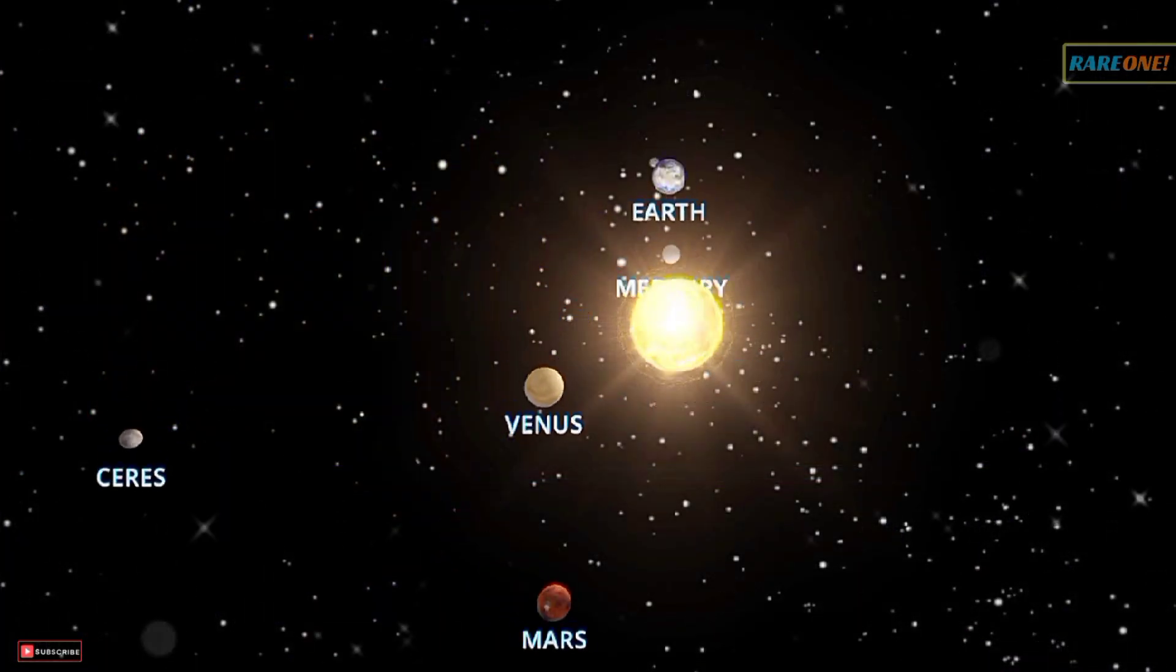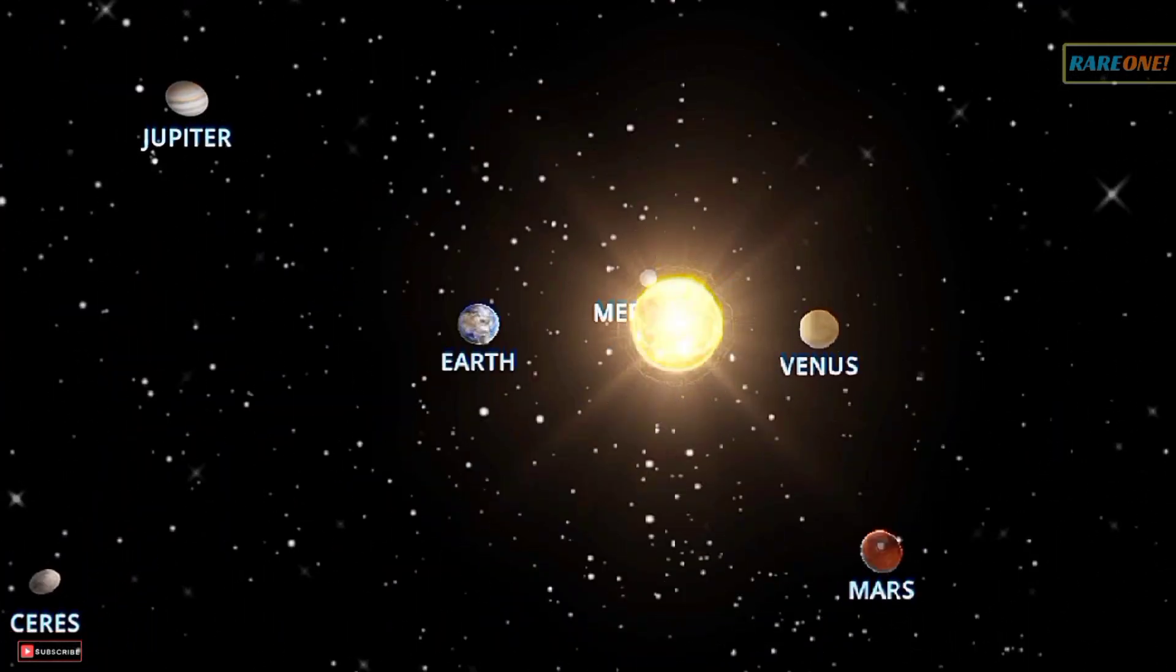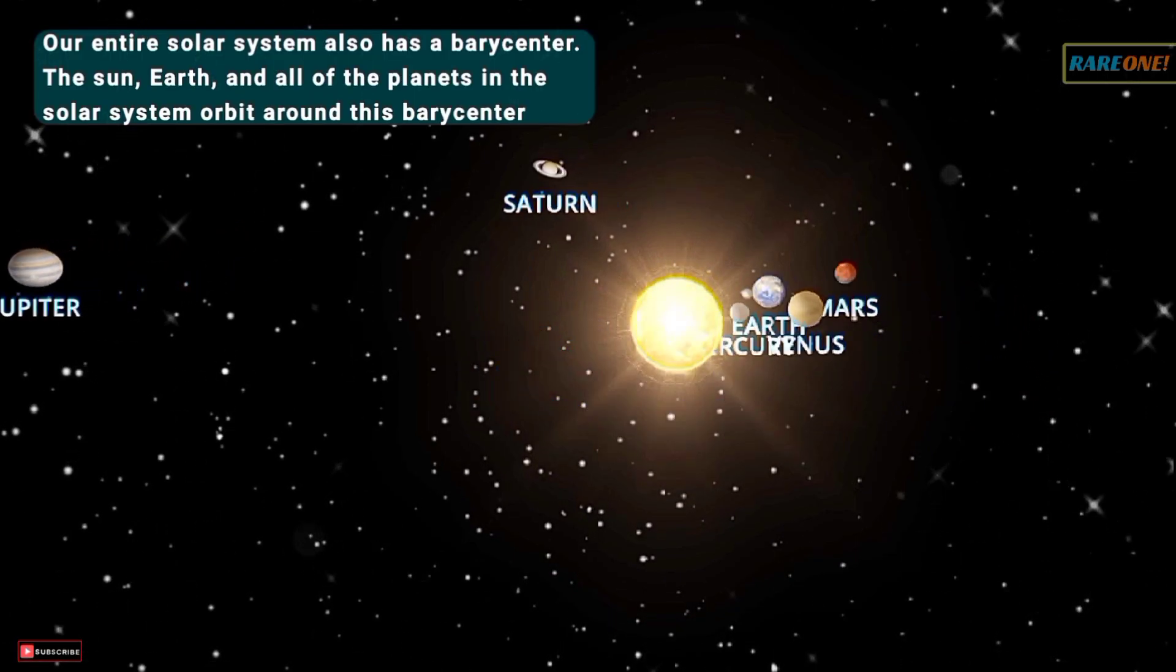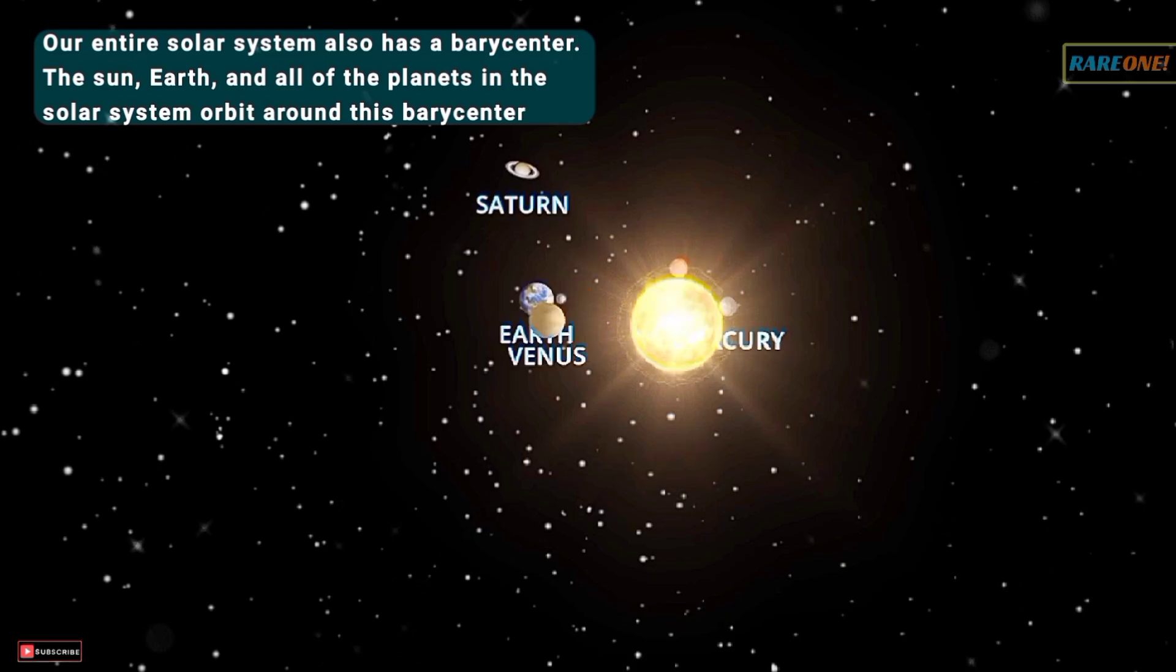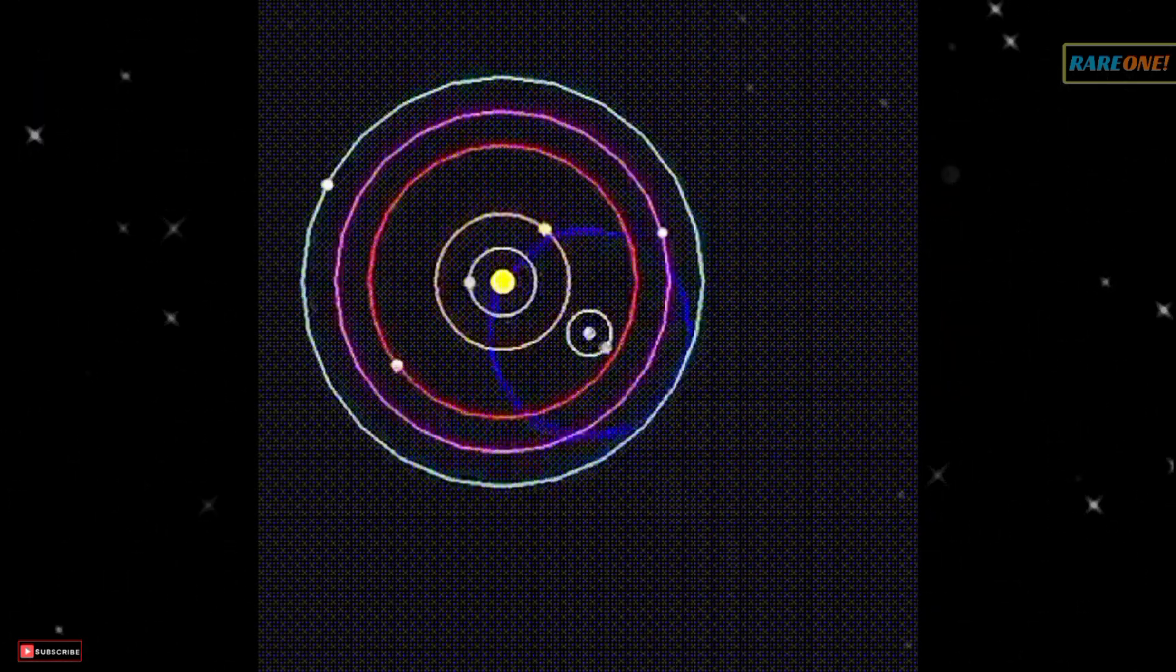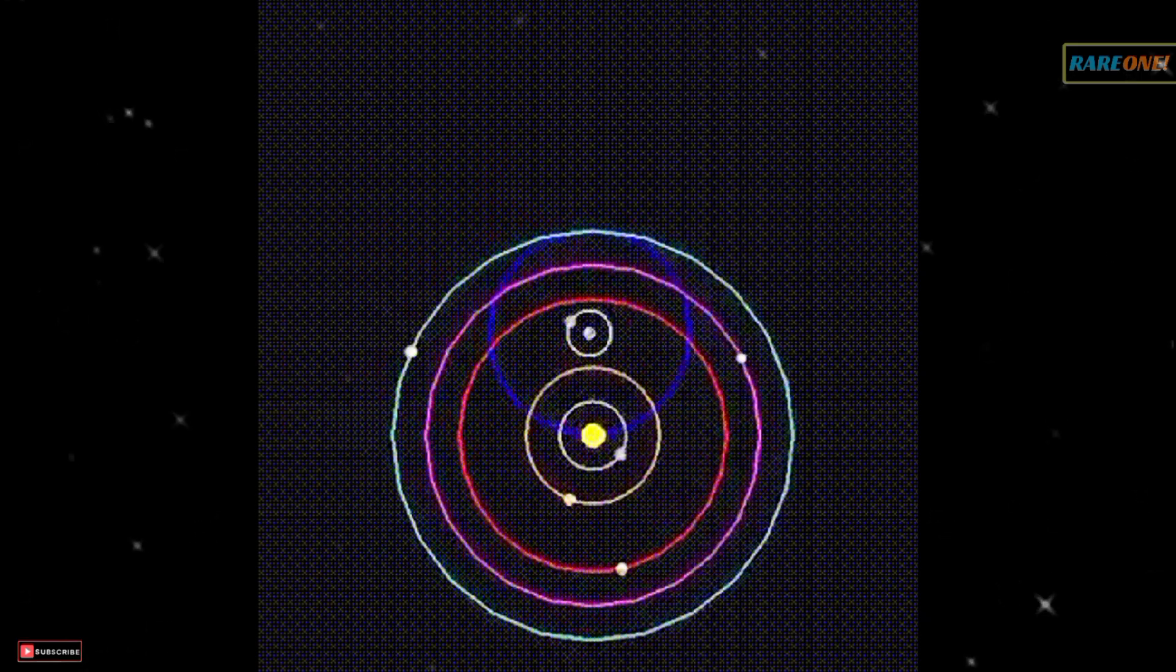And here's where it gets mind-blowing. Our entire solar system has its own barycenter, where the Sun, Earth, and all the planets orbit around. It's like the gravitational heart of our celestial neighborhood.